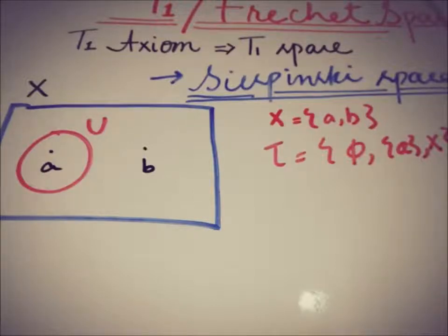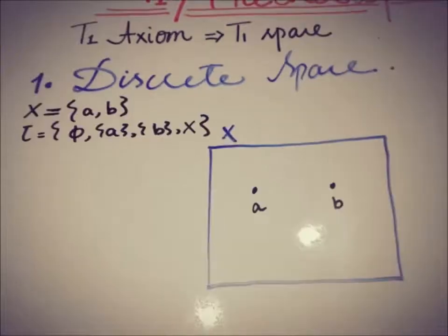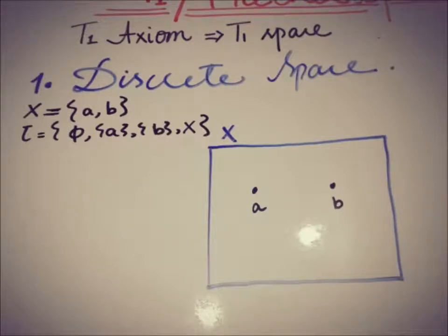Now moving to examples of the T1 space. The very first example is the discrete space — every discrete space is a T1 space. We will verify this by taking a finite topological space where X contains only two points A and B, and the topology is the discrete topology, which contains all possible subsets of {A, B}.